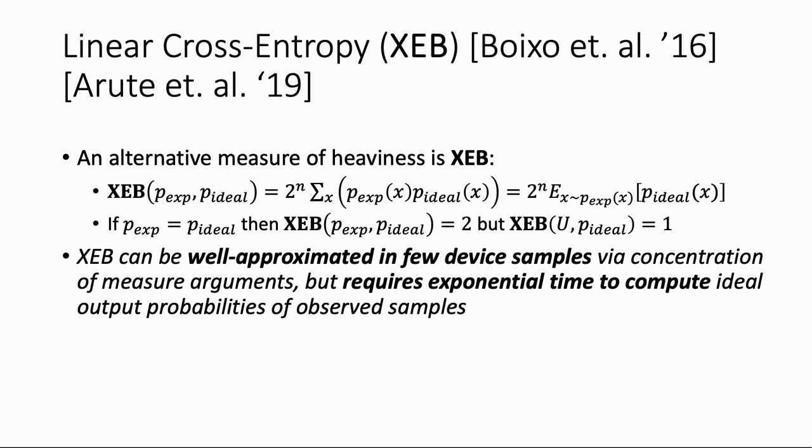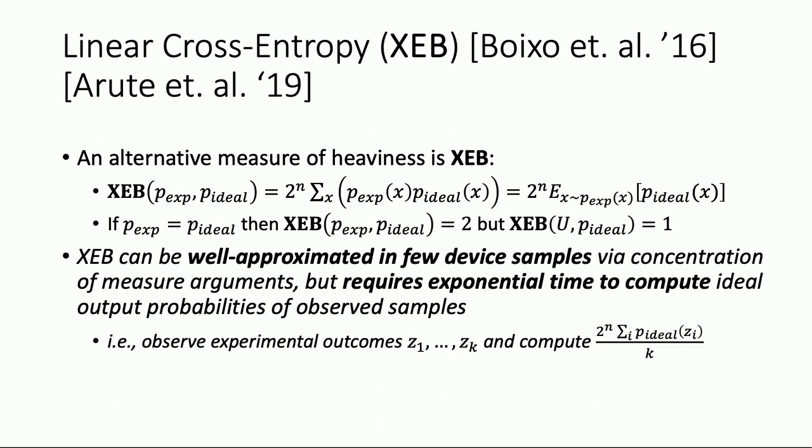There might be a small advantage compared with just sampling from the circuit, because you only have to compute in principle a small number of output probabilities, whereas sampling from the output distribution with a classical algorithm would presumably take a lot more. But it's a fine line. So what we do is: observe some experimental outcomes z1 through zK, then take two to the N times the ideal output probabilities — each one computed on a classical supercomputer — take the arithmetic mean, dividing by K, the number of samples.